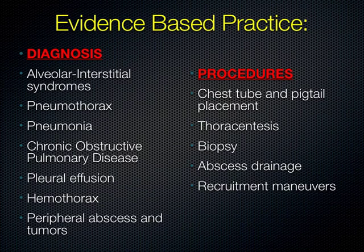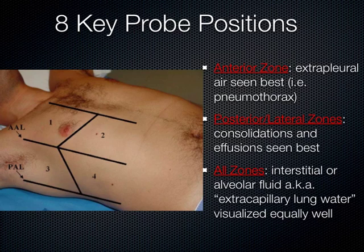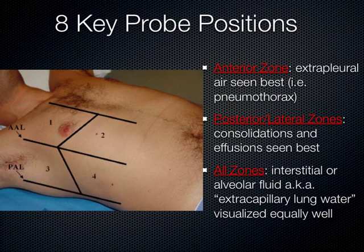There are eight key probe positions — four on each side — that you'll be practicing in your practical sessions. Delineating the chest by the sternum, anterior axillary line, and posterior axillary line divides it into four areas on each side. We primarily focus on the anterior because of gravity — if a patient is supine, any fluid in their lungs will go to the back and you'll get false positives imaging there. So we image the front and sides to see what's going on.